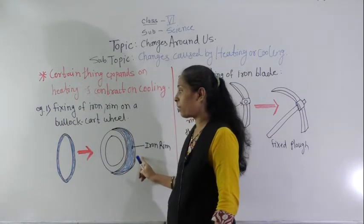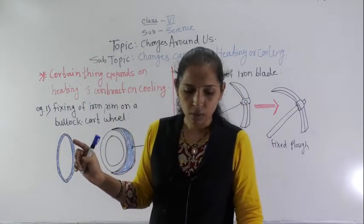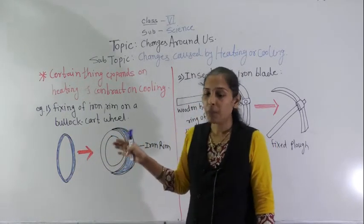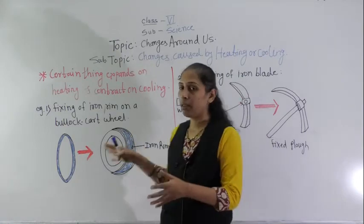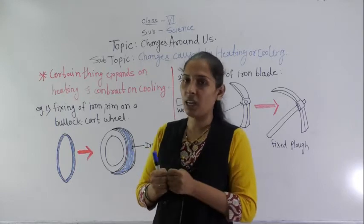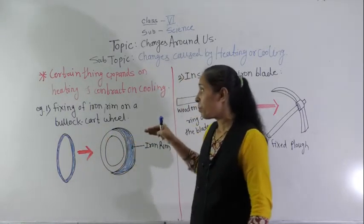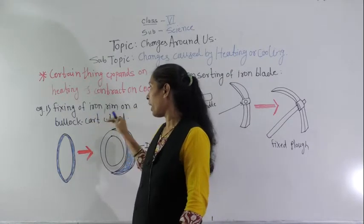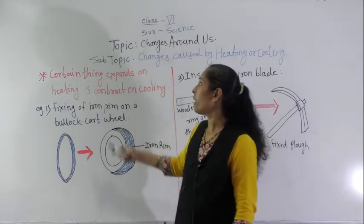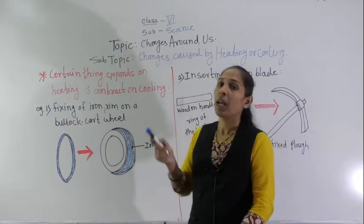After fitting, we pour water over the hot iron rim to cool it. On cooling, the iron rim contracts and gets tightly fixed around the wooden wheel. This is how fixing of an iron rim on a bullock cart wheel happens using the property of expansion on heating and contraction on cooling.